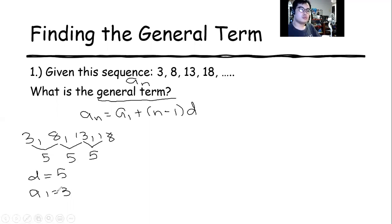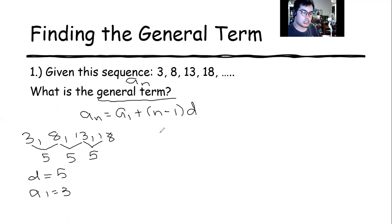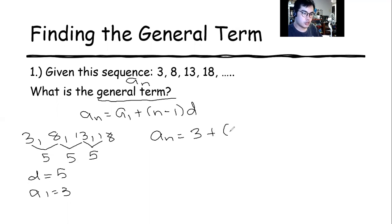We're going to perform the substitution method using the given. Since we don't know what a sub n is, we're going to copy a sub n. What is your a sub 1? Which is 3. We're going to copy n minus 1, then our d is 5.